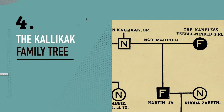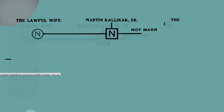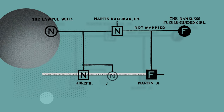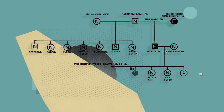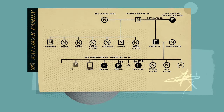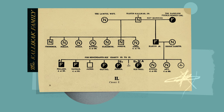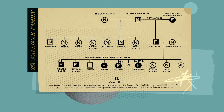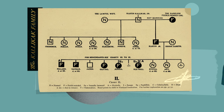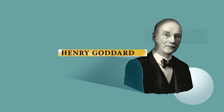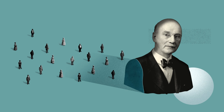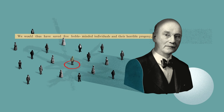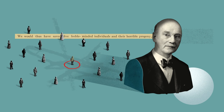Data visualisation can also be used for misinformation, sometimes with disastrous consequences. This is the Kalikak family tree. As a chart, it's not groundbreaking, but its impact was profound. It was conjured up by Henry Goddard, an American psychologist and eugenicist, who believed that one of society's greatest problems was feeble-minded people — basically anyone deemed to be of lower intelligence.